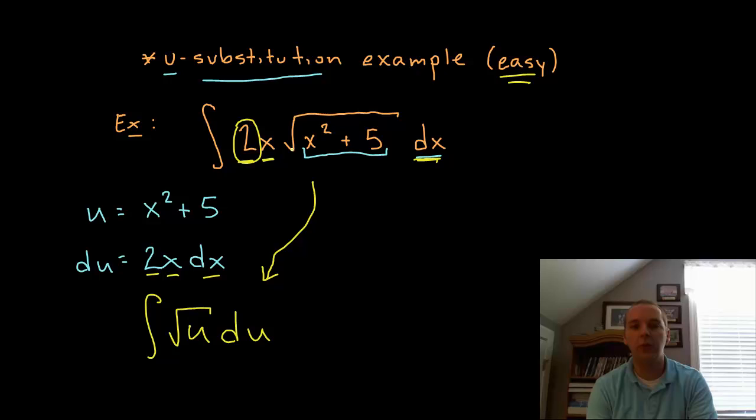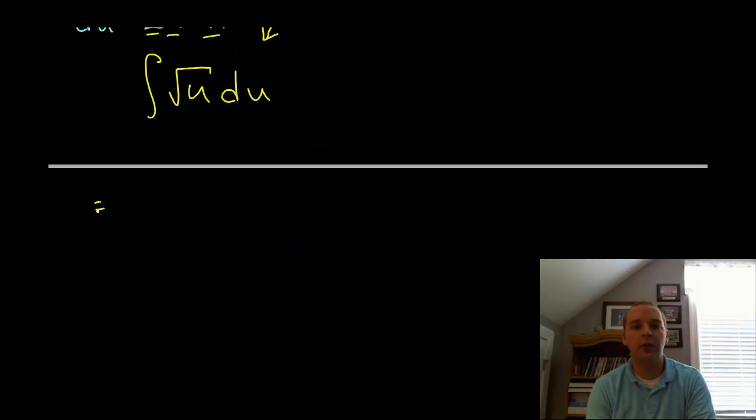So anyway this one fits out well—2x dx is the same thing as du. So that looks much more manageable to integrate. The integral of the square root of u, if you're not familiar with that, what we typically do with radicals is change those radicals to rational exponents, so we'll say to the 1 half power because that's the same thing as the square root.